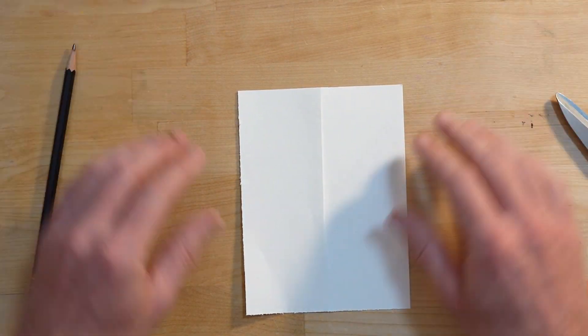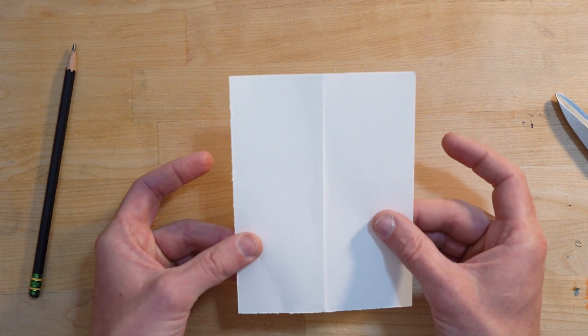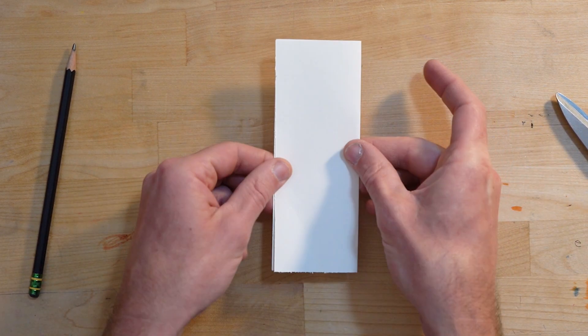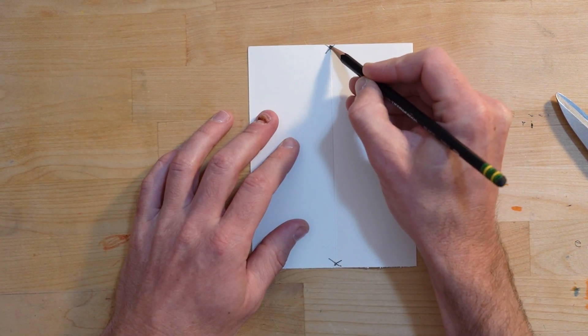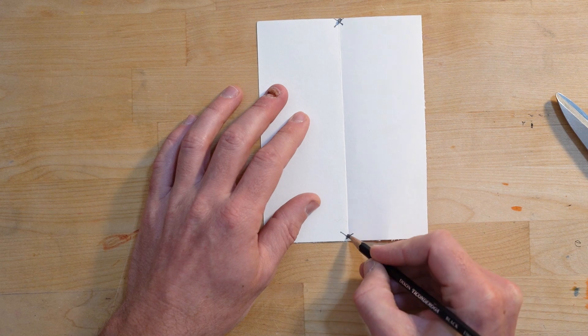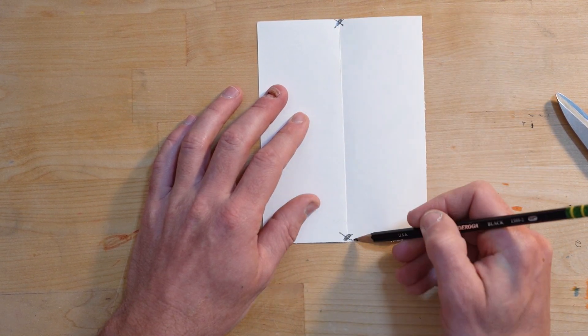First thing we're going to do is take our cardstock and fold it in half vertically. We're going to make a couple of marks at the very top and the very bottom right in the center.